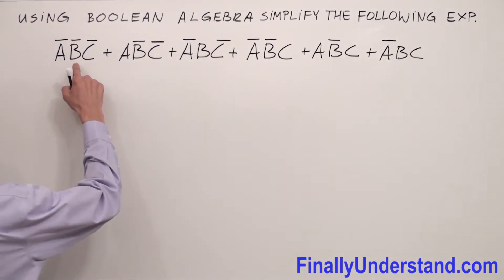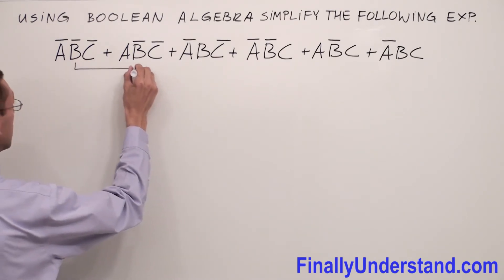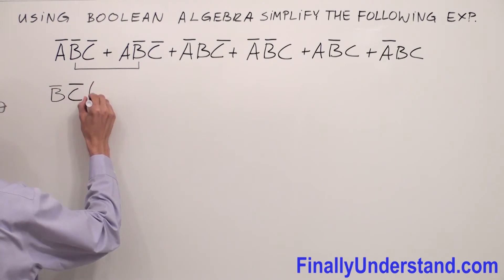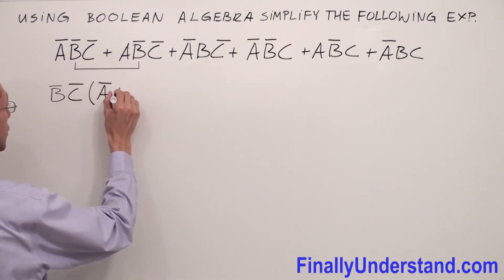In these two terms we have B̄C̄ and C̄. I'm going to factorize B̄C̄ and C̄. Inside of the parentheses I'm going to write A plus Ā.